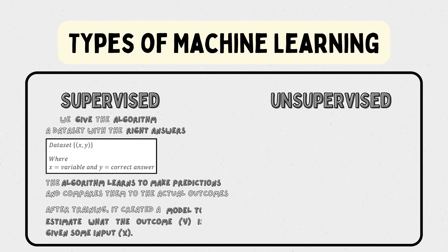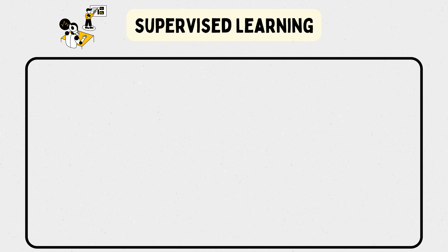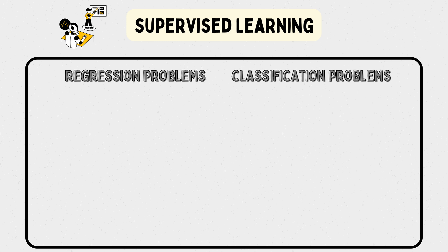After training, it created a model to estimate what the outcome y is given some input x. In supervised learning there are two possible problems you might come across: regression problems and classification problems.